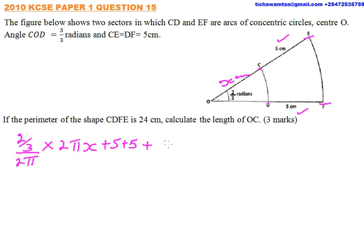Which we get by taking 2/3 over 2π, multiply by 2π. Now the radius of the outer circle is X plus 5, so we write here it is X plus 5. Then that circumference is equal to 24 cm.